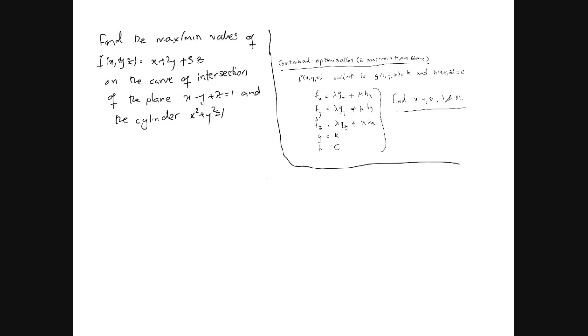Let's look at a quick example. We want to find the maximum minimum values of f(x,y,z) equals x plus 2y plus 3z on the curve of intersection of the plane x minus y plus z equals 1 and the cylinder x squared plus y squared equals 1. We'll let g equal x minus y plus z equals 1, and h equal x squared plus y squared equals 1.